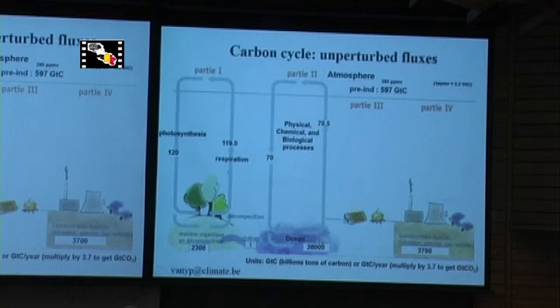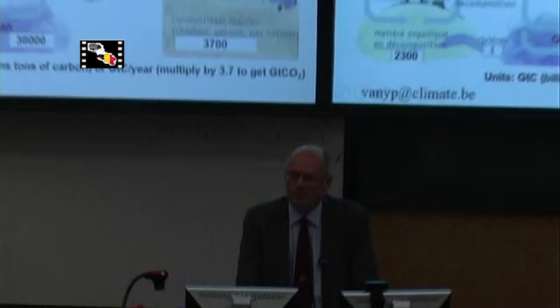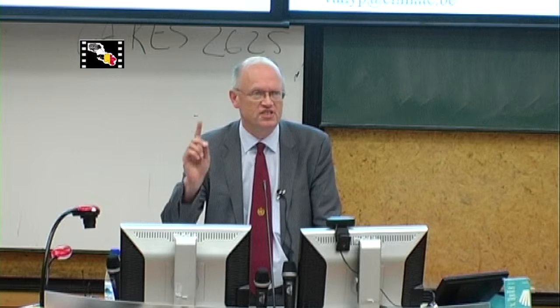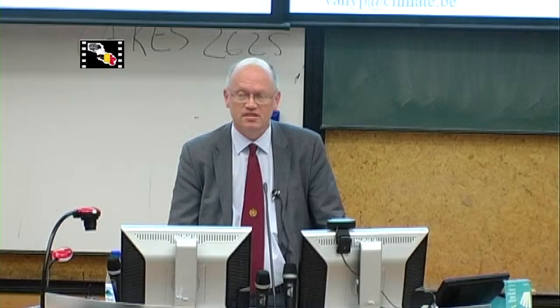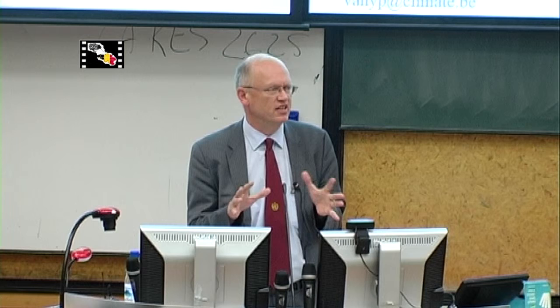Absorption through photosynthesis is approximately the same amount. In the oceans, there is also a big loop with emissions — mostly in the warmer parts — of a little more than 70 billion tons per year, and absorption, mostly in the cooler parts, of approximately the same quantity. Adding these up gives 190 billion tons of carbon, with absorption before human perturbation being exactly the same amount. This has been the situation for the last 10,000 years, approximately.